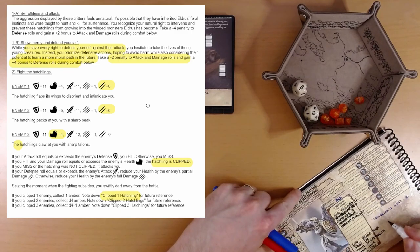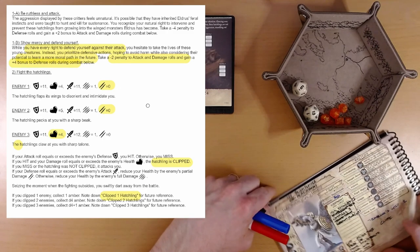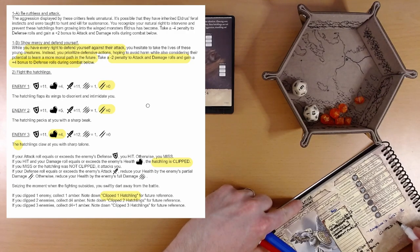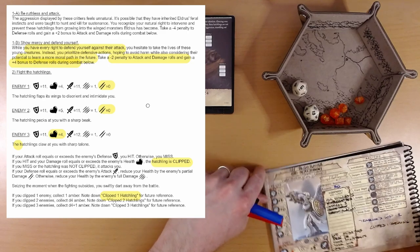So I'm writing down clipped. Actually, I'm probably supposed to write this. Clipped one hatchling. We have that list. I don't know if this is a keyword. Clipped one hatchling.